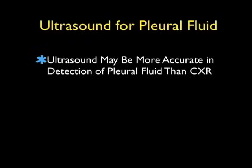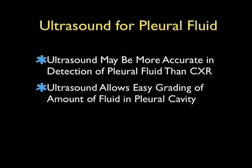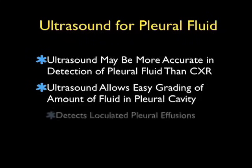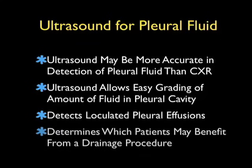In conclusion, ultrasound may be more accurate in detection of pleural fluid than a chest x-ray and allows easy grading of the amount of fluid within the pleural cavity. It can also detect complicated pleural effusions that may be loculated and can help determine which patients may benefit from a drainage procedure such as a thoracentesis or tube thoracostomy. I hope to see you back as SoundBytes continues — in further modules we'll actually look closer at the thoracentesis procedure under ultrasound guidance.